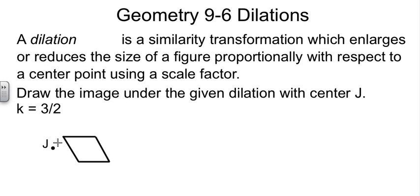So you're going to take the distance from J to that corner, have a good eyeball distance on that, and you're going to multiply that times 3 halves. So if this were an inch, then you would go out to an inch and a half. If it were a foot, you'd go to a foot and a half. Well, I'm just going to kind of estimate there for that first point.